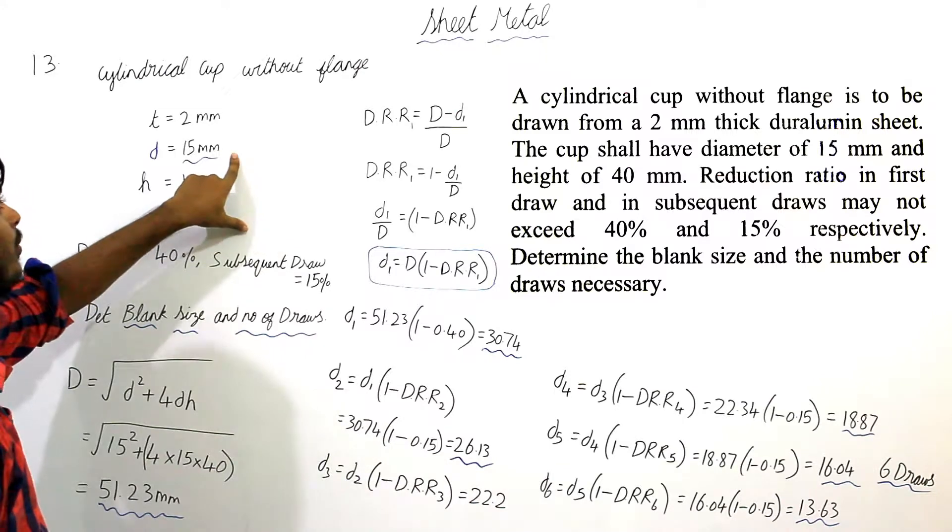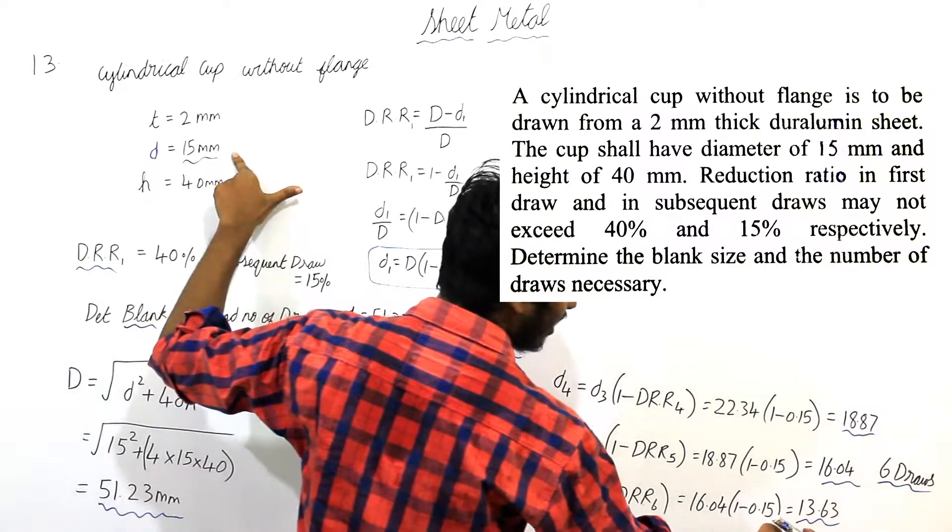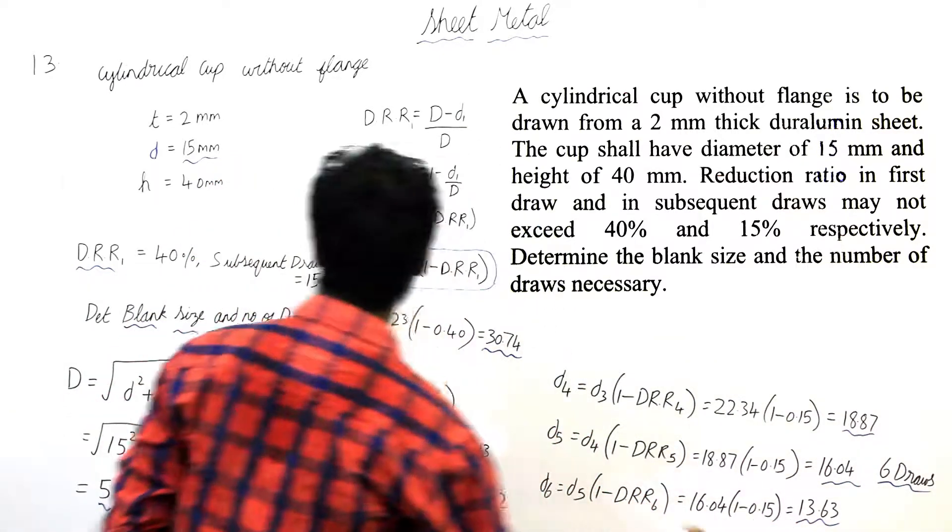This is the final diameter of the cylindrical cup shape component. But, after 6th draw, we are getting a diameter of 13.63. It is much lower than the required diameter.